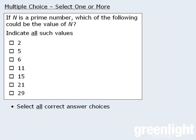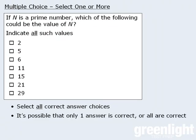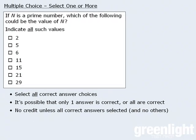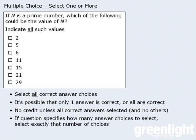It's important to note that it may be the case that only one answer is correct or all of them may be correct or anything in between. To receive credit for this question type you must select all of the correct answers and no more. Finally, if the question specifies how many answer choices to select, be sure to select exactly that number of choices. Now for this particular question the correct responses are as follows.